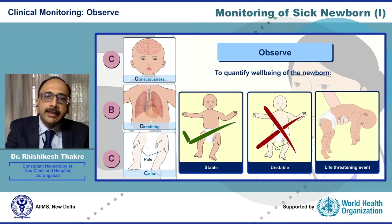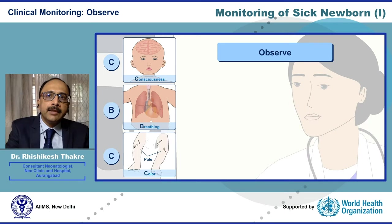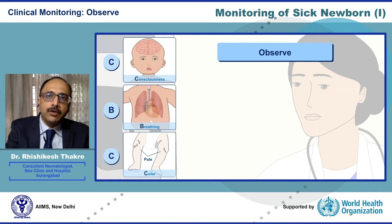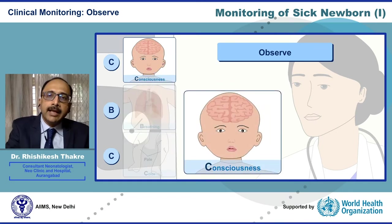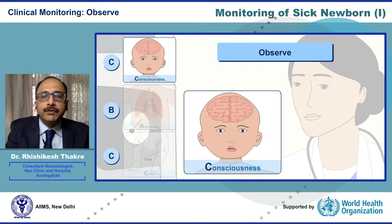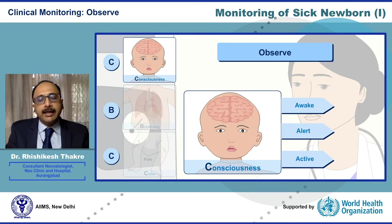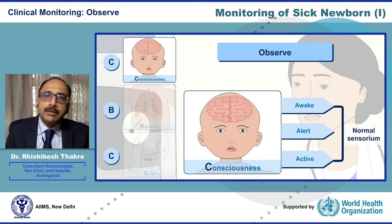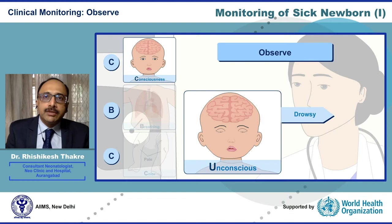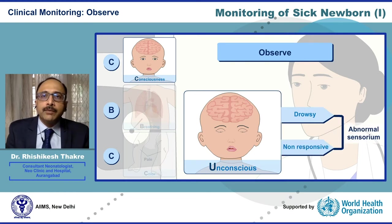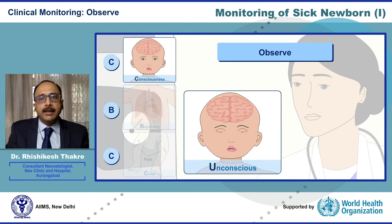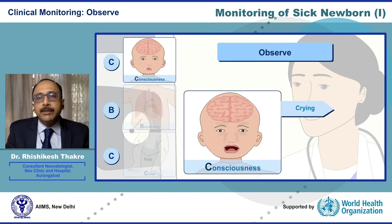Let's look at CBC in detail. The C of the CBC stands for Consciousness, and Consciousness gives us information of perfusion of the brain. A baby who is awake, alert and active has normal sensorium. However, if the baby is drowsy or non-responsive, it has an abnormal sensorium. Assessment of the cry is equally important.